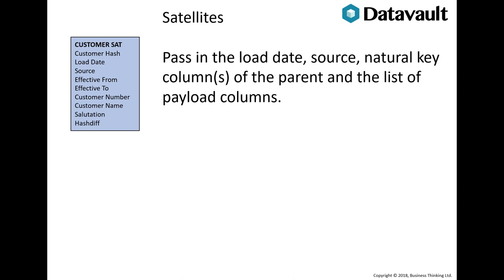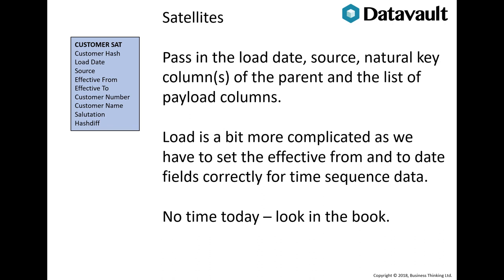What values do we have to play with in the satellite? Satellites are a bit more complicated. We have a primary key hash, which is a hash of the parent hub or link table's natural key, some metadata, a list of payload columns, and a hash of the payload columns. The SQL to load a satellite is more complex, but it still follows a pattern. I don't want to spend time here analysing that SQL; however, you can see the details in the Data Vault book.